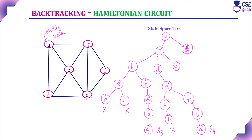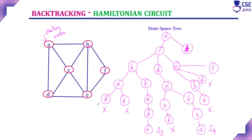Path A-C-E: from E the unvisited vertices are B, D, and F. Visiting B: you can visit F but not D — dead end. Visiting D: not possible to reach B and F — dead end. Visiting F: from F you can visit B but not D — dead end. So through vertex C, there are two solutions found: solution 3 and solution 4. B and C paths are now complete.